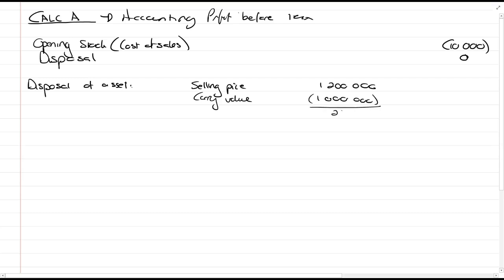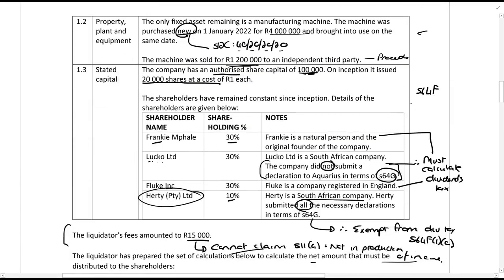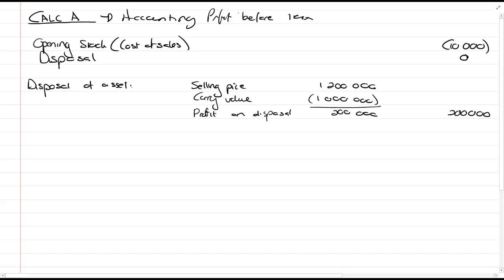For accounting it just means we've made a loss. So, that's the first bit. Then we have this asset. The asset was sold for 1.2 million rents and it had a market value or a carrying value, sorry, of a million. So, disposal of asset. Selling price, 1.2 million. Carry value, book value, 1 million. That gives us a 200,000 rents profit on disposal. Very simple. Again, guys, it's accounting, not tax. And then we have this distribution of the dividend.